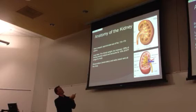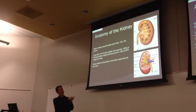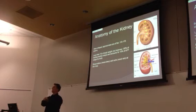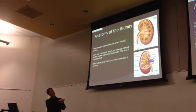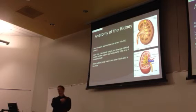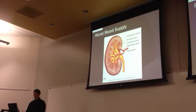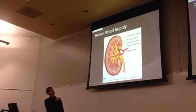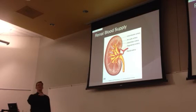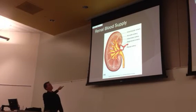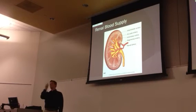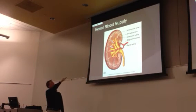Once the nephrons produce the urine, it ultimately ends up going into the calyx - starting in the minor calyx at the tip of that pyramid, then going to the major calyx and finally out through the ureter. Our main focus is everything that happens inside the cortex and renal medulla to produce the urine. You can see blood coming in and going out to the cortex through the renal arteries - that's where the filtration starts - then it goes out to the renal veins.